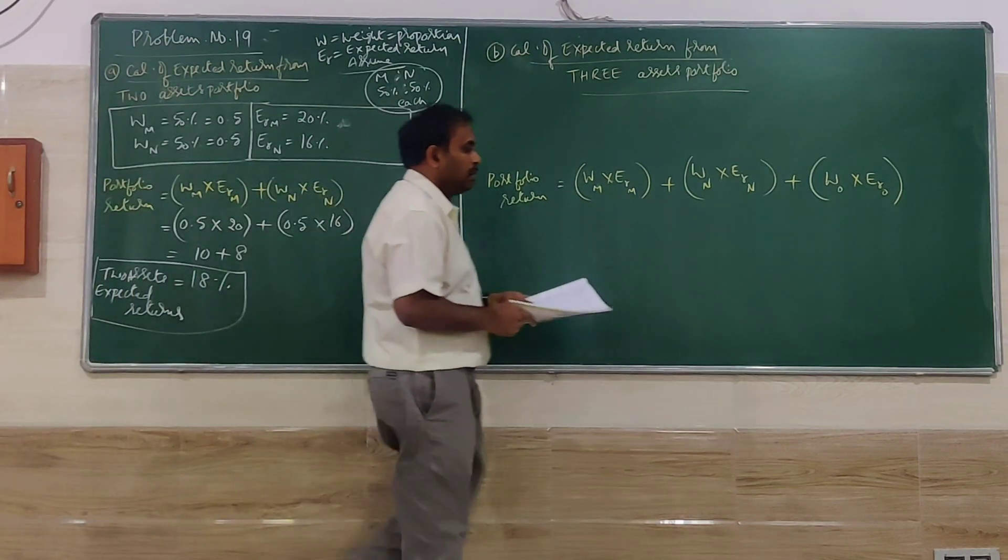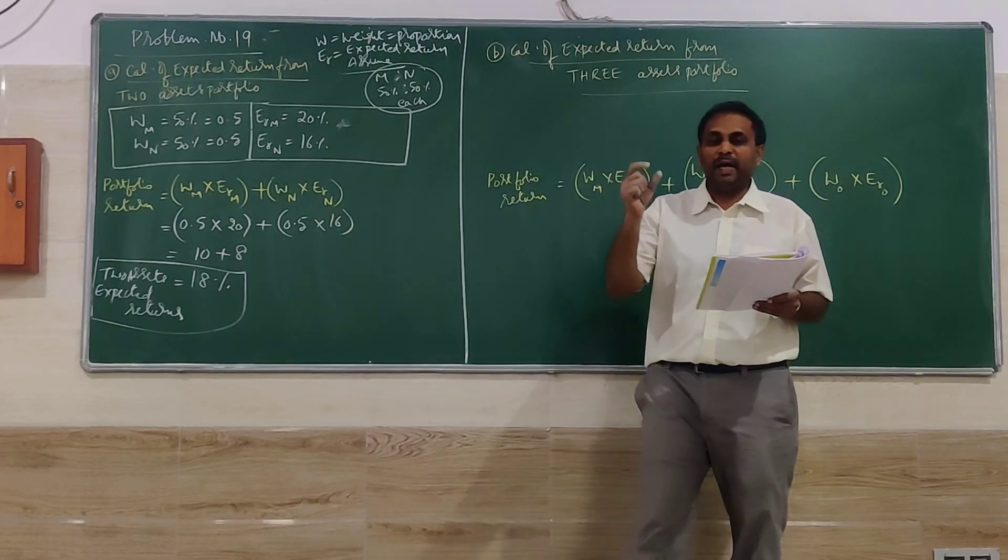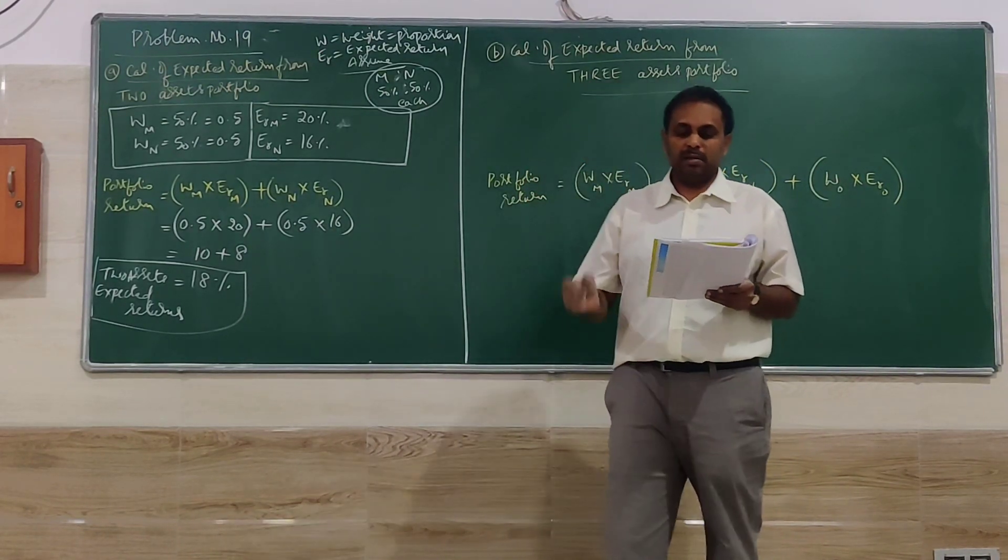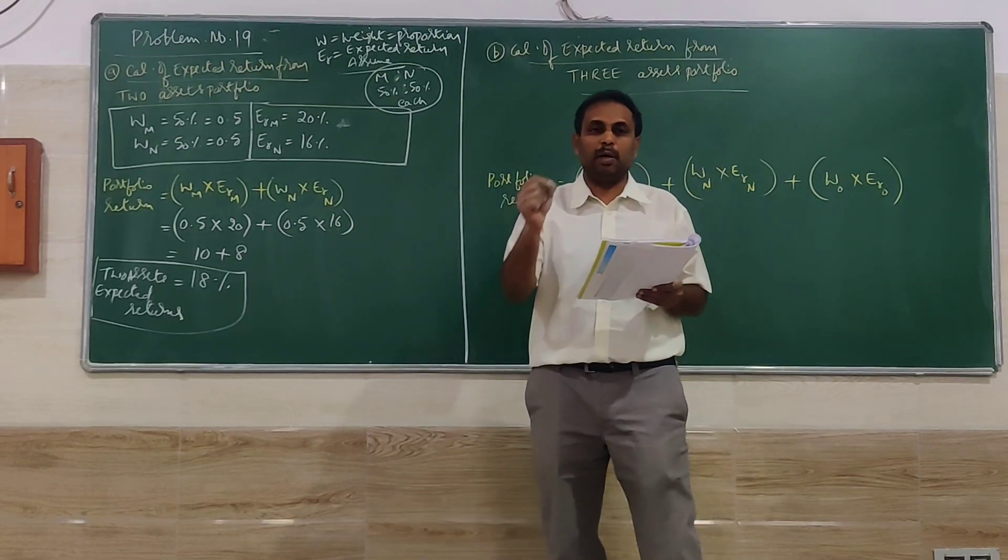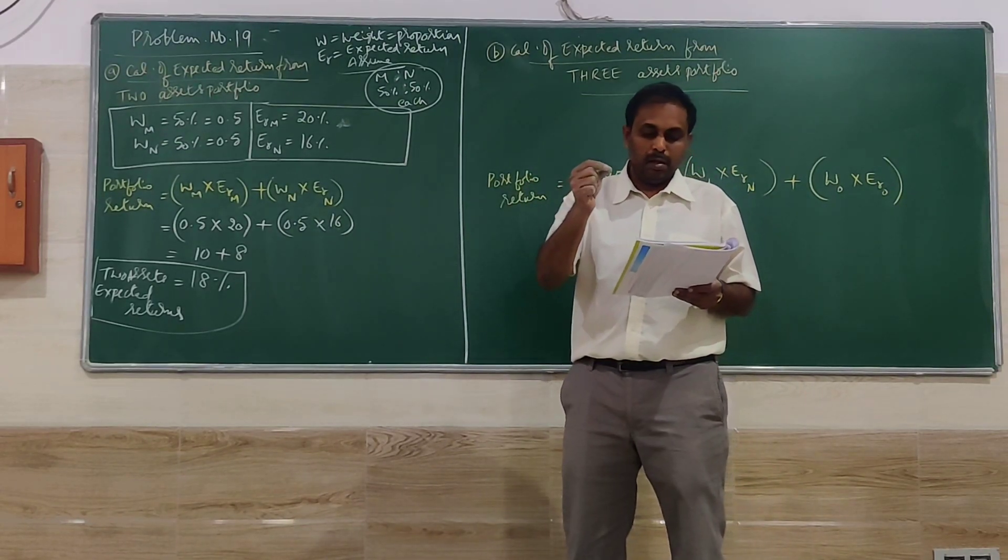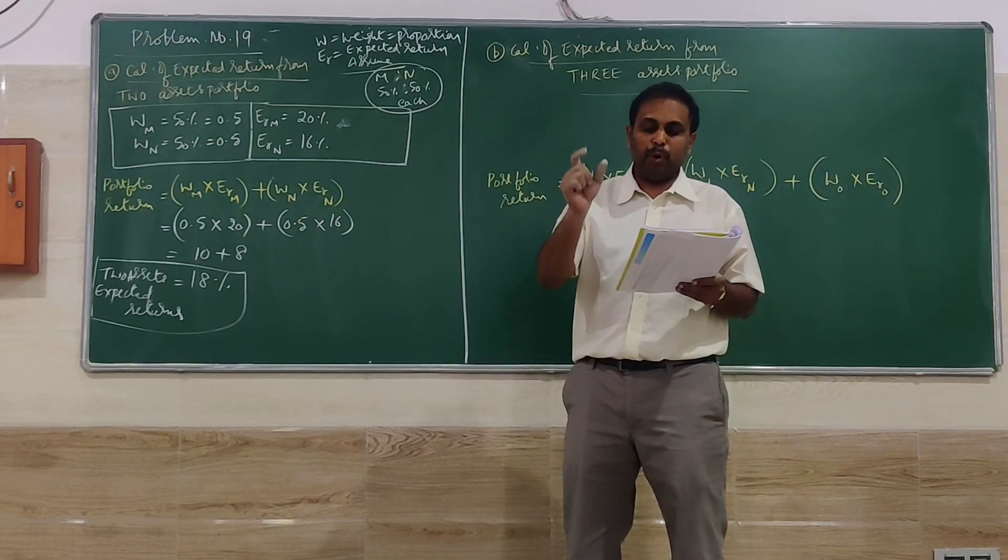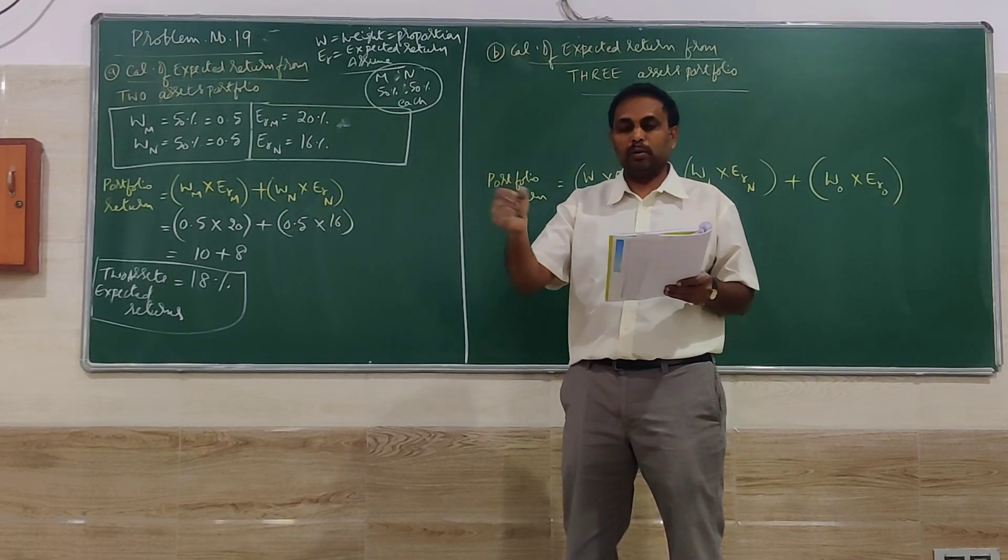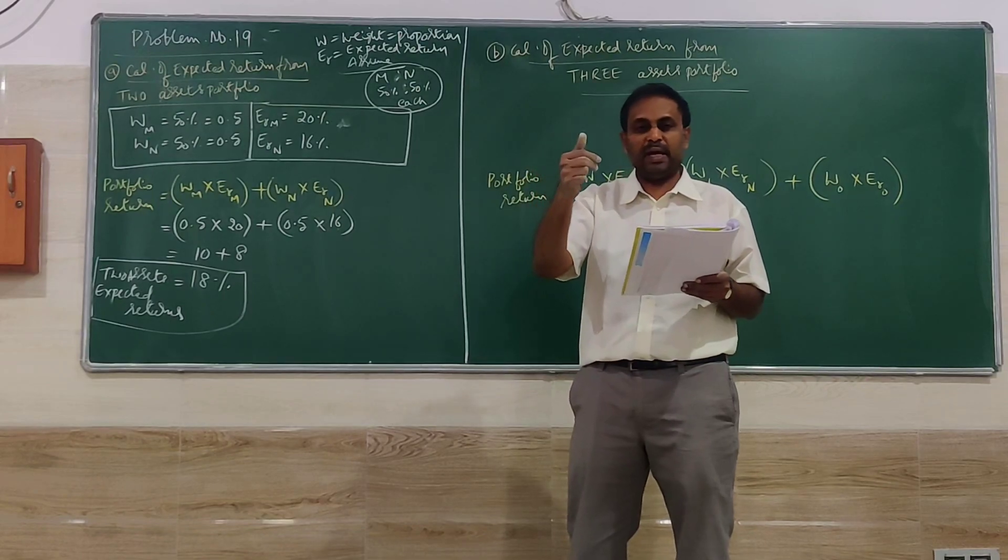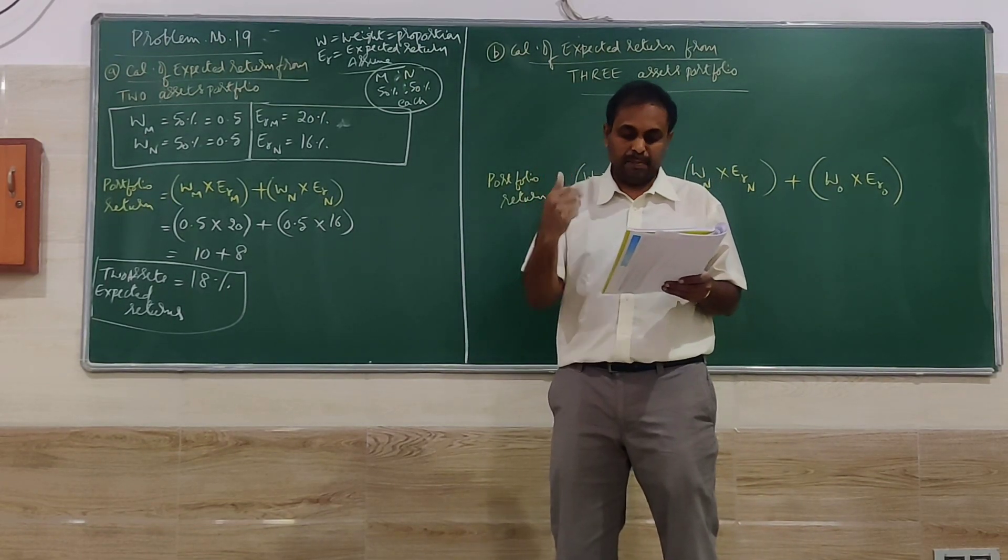Coming to question B, we have to read this very carefully. Some tricky words will be there—we have to observe them. Question B: Continuing the above two-asset portfolio, so from the beginning whatever we had, some information will be the same.